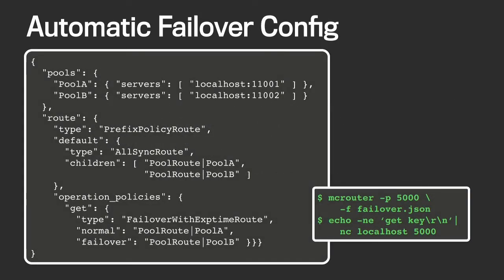Let's dive into how you would actually set it up. We have a simple example: we want to have two servers, one of them as a normal destination and one as a backup. We want to send all get requests to the normal destination and failover to the backup. At the same time, we want to send all sets and deletes to both of them simultaneously so that the backup has the data.